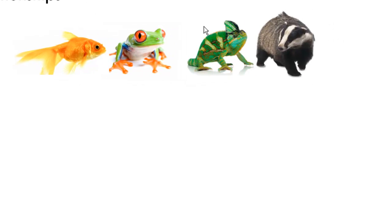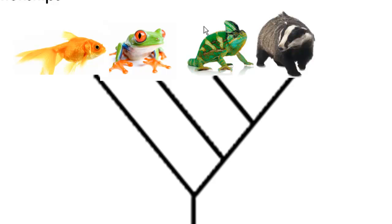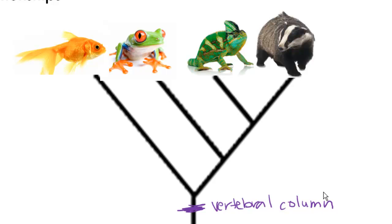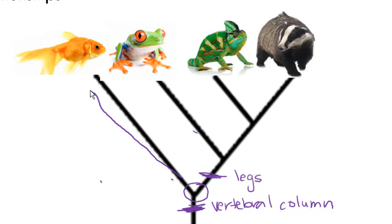What we just did is we created a phylogenetic tree, and it helps us show evolution and relationships. Somewhere way down at the base, there is some organism that first had a backbone — a vertebral column. That means everything on this list, starting with the fish and going all the way up through the badger, has a backbone and shares a common ancestor with that trait. As we keep going up, there's another trait, such as legs, that everything above — the frog through the mammal — shares, but the fish does not. So the fish went off into its own group, its own outgroup.